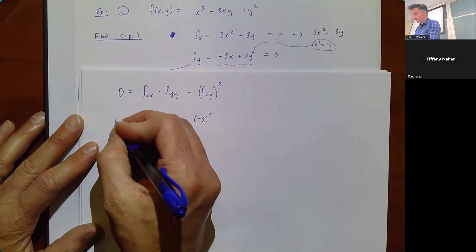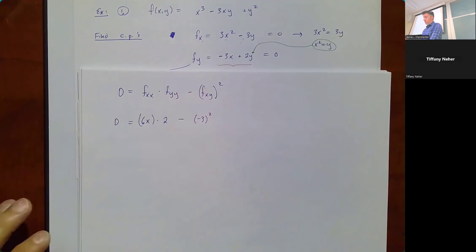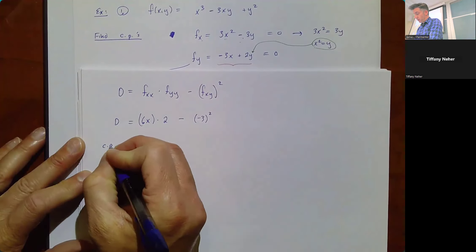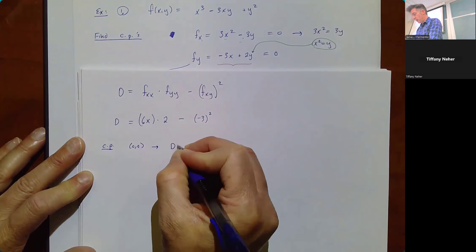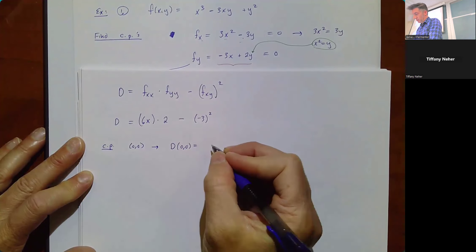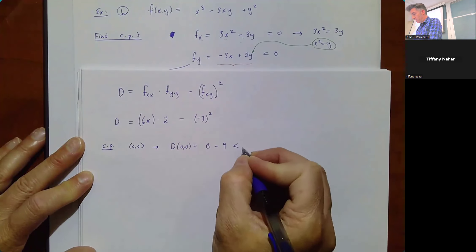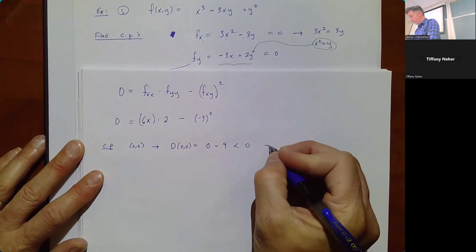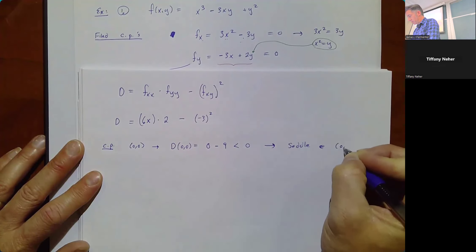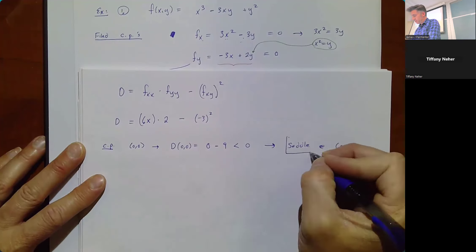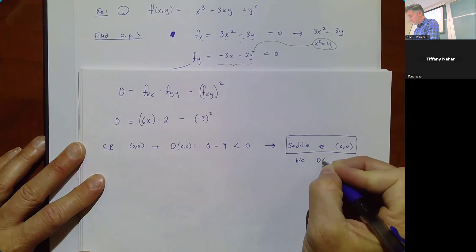As tempting as it might be to simplify D further, I really don't think you want to. Now check each critical point. At (0, 0): D = 6(0)(2) - 9 = -9, which is negative. When D is negative, we always have a saddle point. So (0, 0) is a saddle.